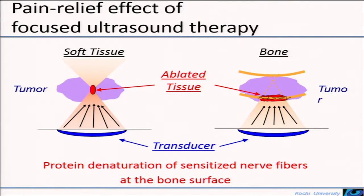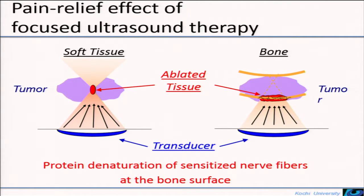Thank you very much for giving me the opportunity to present my study here. Hyperthermy can cause the necrosis of regions in soft tissue depending on the cauterization through high temperature at the focused spot. On the other hand, the sonication to the bone can cause the protein denaturation of sensitized nerve fibers depending on the increased temperature of the surface of the target bone. This process can be used for the management of pain of bone and joint disease.